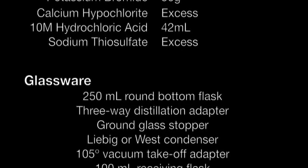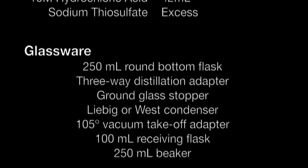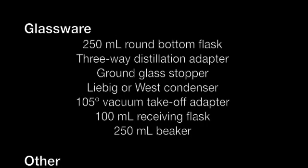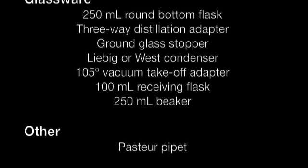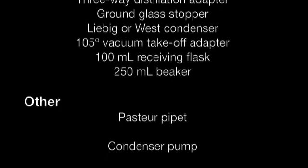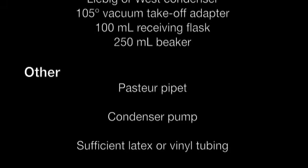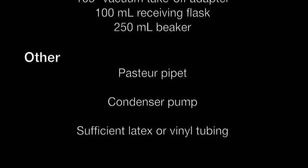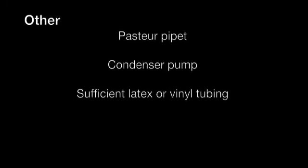For glassware you will need a 250 milliliter round bottom flask with a ground glass joint, a three-way distillation adapter, a ground glass stopper, a Liebig or West condenser with ground glass joints, a 105 degree vacuum takeoff adapter, a 100 milliliter receiving flask, and a 250 milliliter beaker.